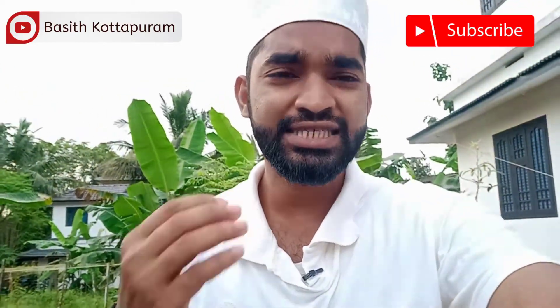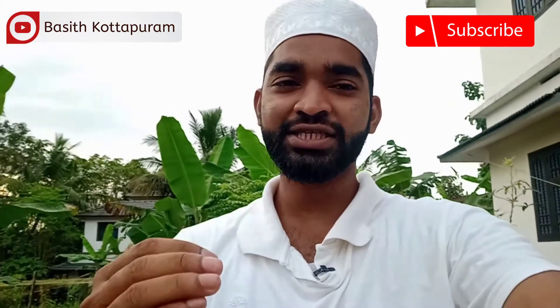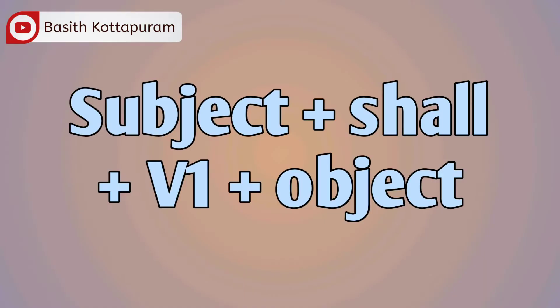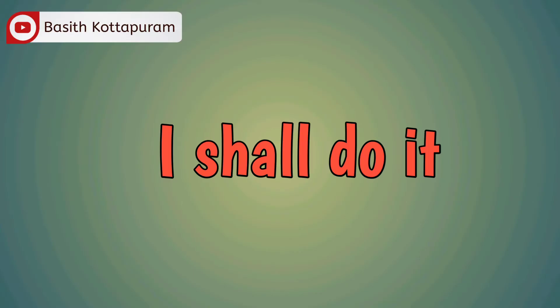What are the things needed to say 'chayam' in English — that is what we are going to learn today. 'Apol chayam nyanadhi' means expressing intention or promise. Generally, with this meaning, the subject 'I' or 'We' is used. The structure is: I/We + shall + V1 + object. So to say 'nyanadhi chayam,' we say 'I shall do it.'